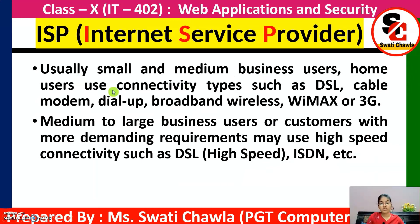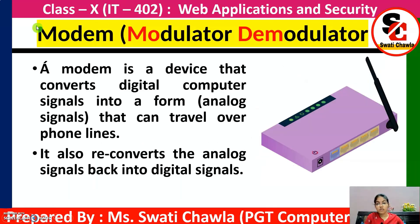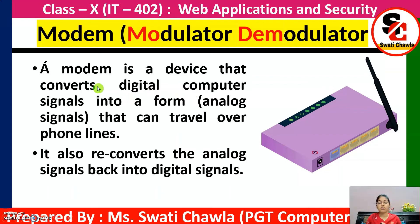For small and medium business users and home users, connectivity types include DSL, cable modem, dial-up, broadband, wireless, WiMAX, or 3G connection. For medium to large businesses with more demanding requirements needing higher internet speed, we can use DSL. Now, a modem — full form: Modulator and Demodulator — is a device that converts digital computer signals into a form that can travel over phone lines, and re-converts analog signals back into digital signals.